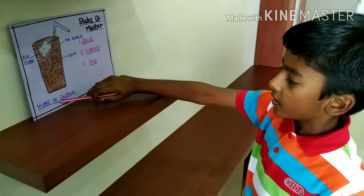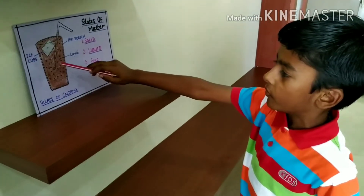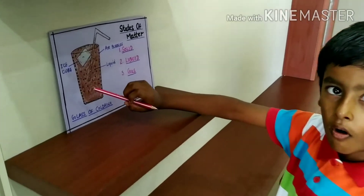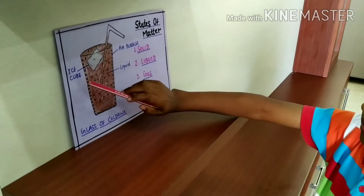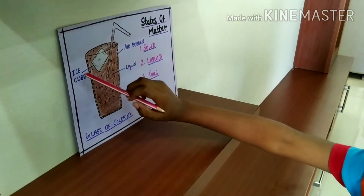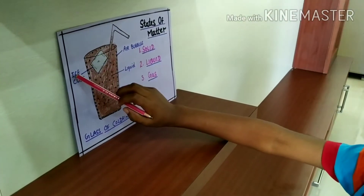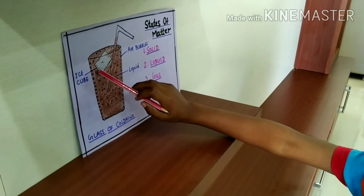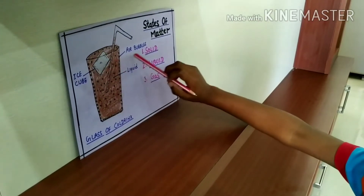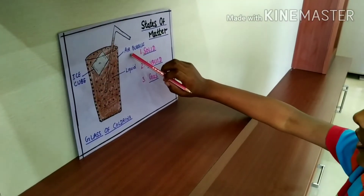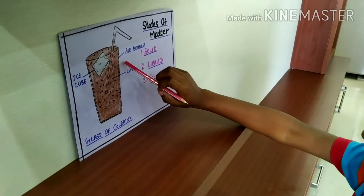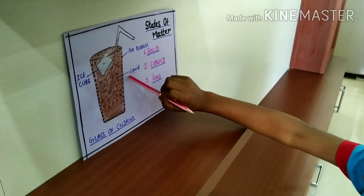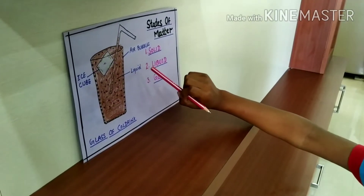This is a glass of cold water. I will show you all three states in the glass. Ice cube — that is solid. Air bubbles — that is gas. The rest part is liquid.